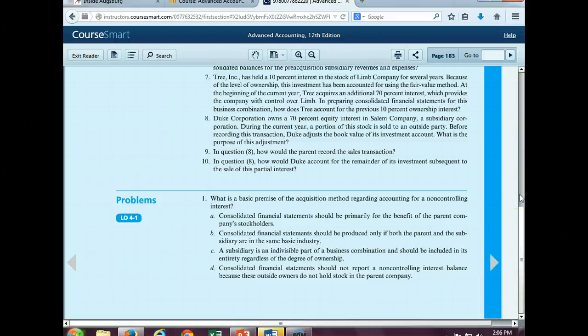Number one says, What is the basic premise of the acquisition method regarding accounting for a non-controlling interest? Would it be A, consolidated financial statements should be primarily for the benefit of the parent company's stockholders? Should it be B, consolidated financial statements should be produced only if both the parent and the subsidiary are in the same basic interest in industry?